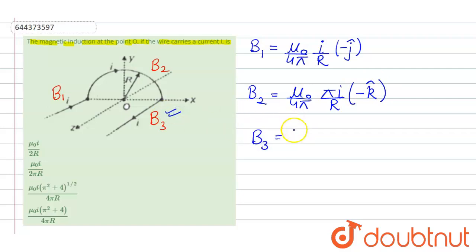And the magnetic field due to this semi-infinite wire will be mu naught upon 4 pi i by r minus j cap. These are the magnetic fields due to different sections of this arrangement.